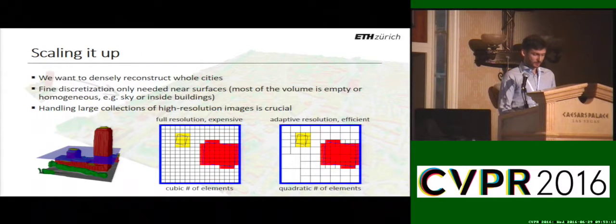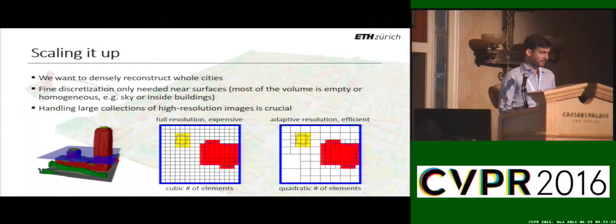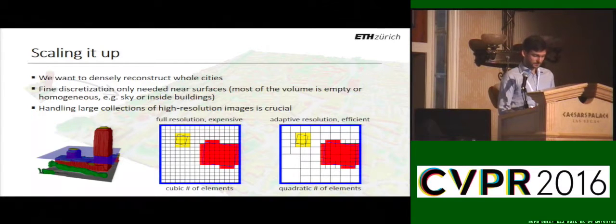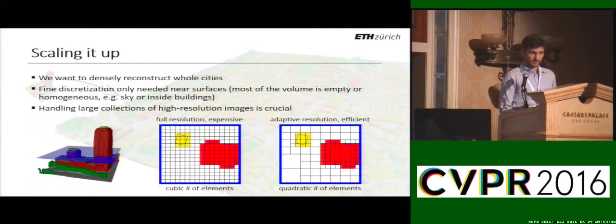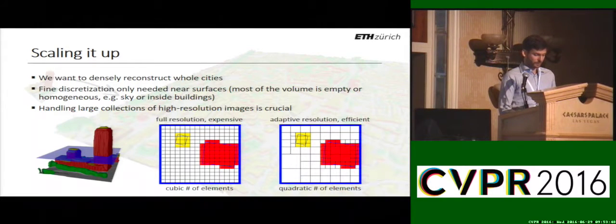To address the large-scale aspect, we want to exploit two facts in our approach. First, we observe that high spatial resolution is actually only needed close to class boundaries, because most of the volume you model is actually empty or homogeneous, as inside solid objects. Therefore, we will use an octree data structure, but with an adaptive structure instead of a fixed structure. Second, since we aim to reconstruct large geographic regions, we will be confronted with large photo collections, and it is crucial to be able to handle and process those.